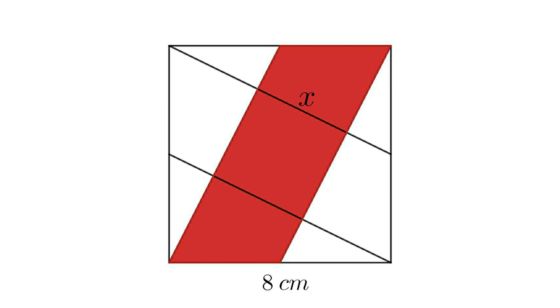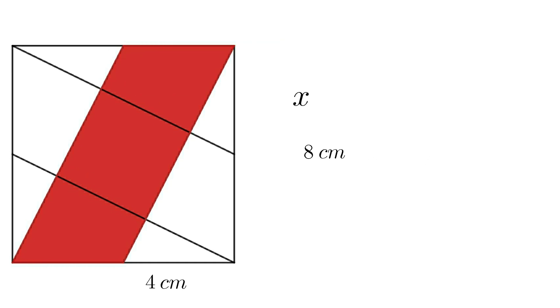First method is to calculate directly by base times height. That is, area equals 8 times 4, which is equal to 32 cm squared.